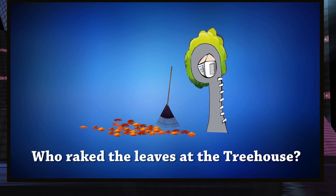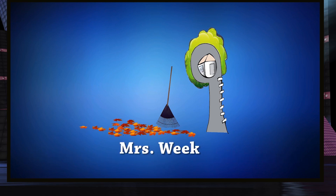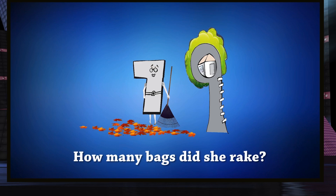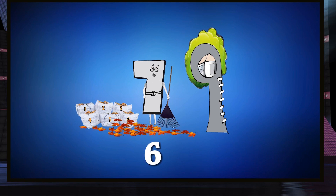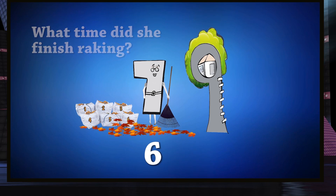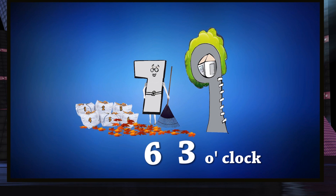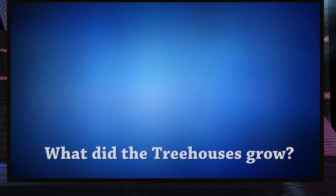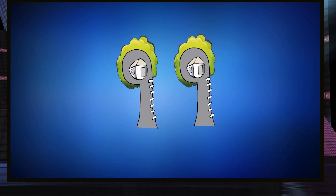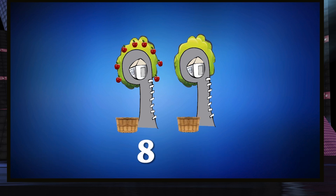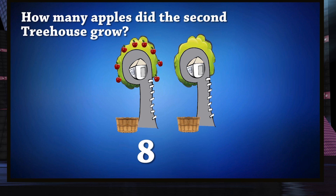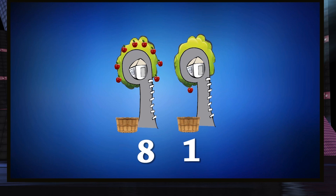Who raked the leaves at the treehouse? Mrs. Week. How many bags of leaves did she rake? Six bags of leaves. What time did she finish raking? She finished at three o'clock. There were two treehouses — what did they grow? They grew apples. How many apples did the first treehouse grow? Eight apples. How many apples did the second treehouse grow? It grew only one apple.